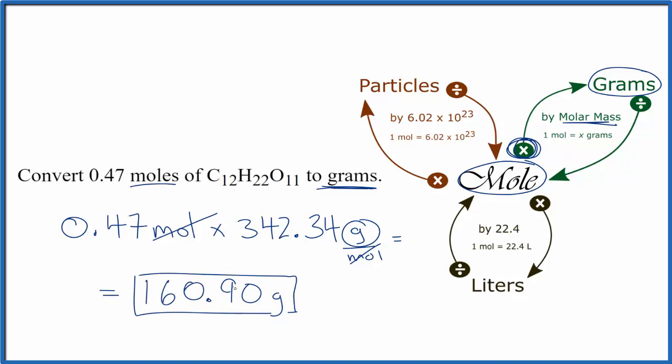If we were given grams, we could just do the reverse operation to get moles. So we could go from grams, we would then divide by the molar mass, and that would give us moles.